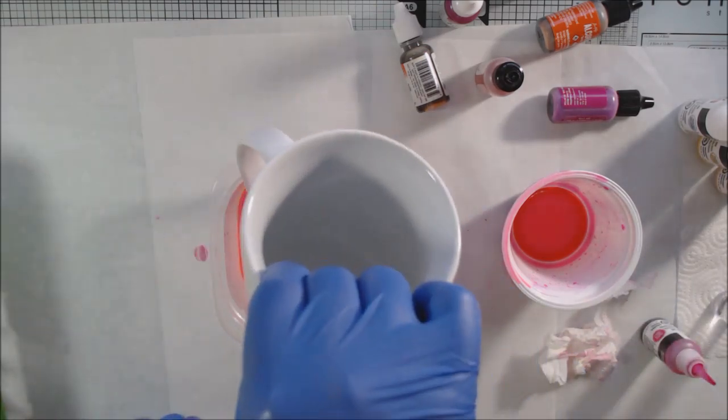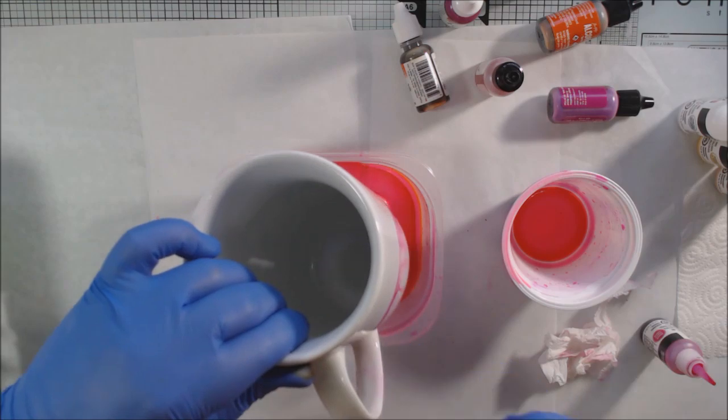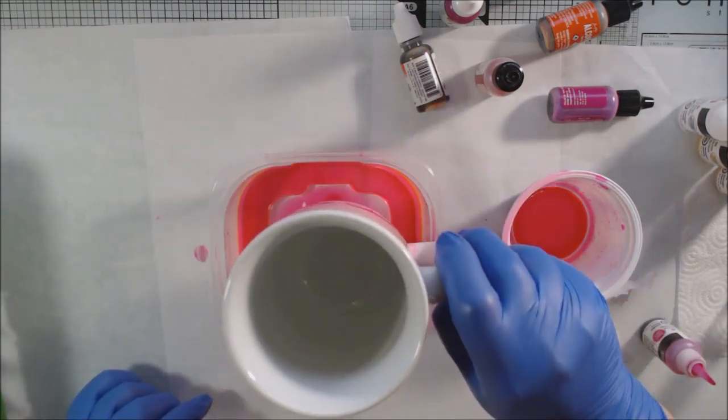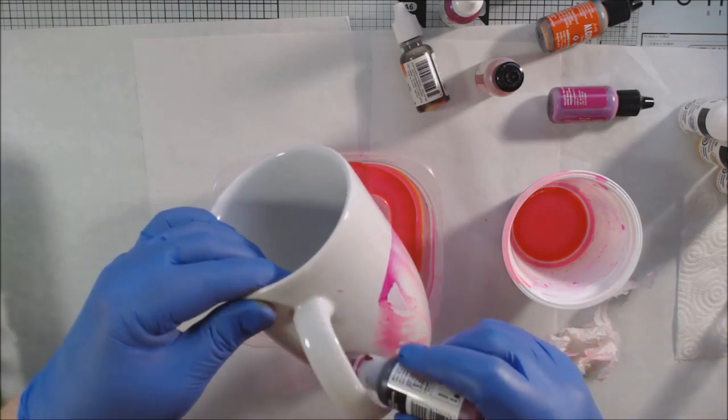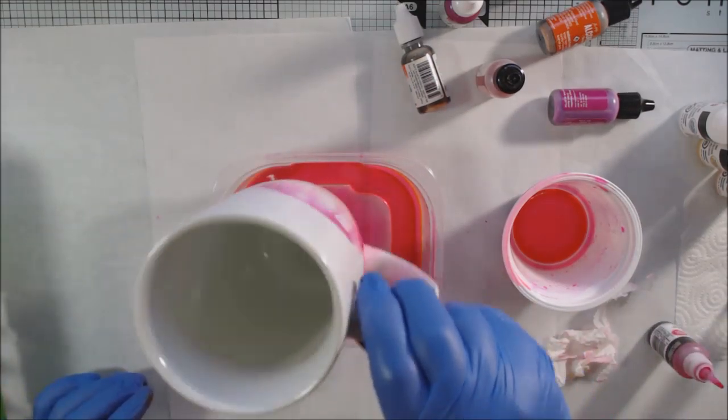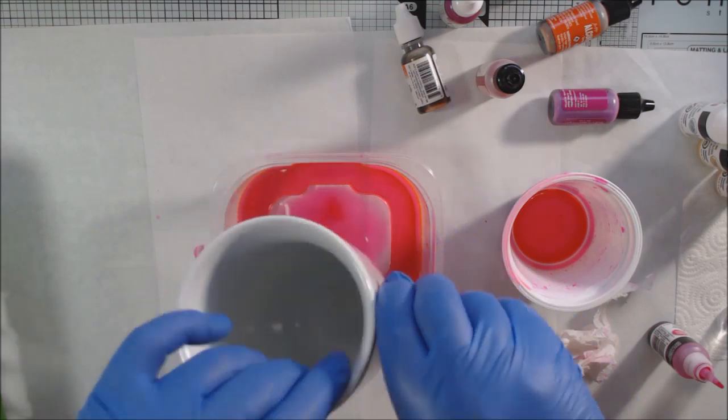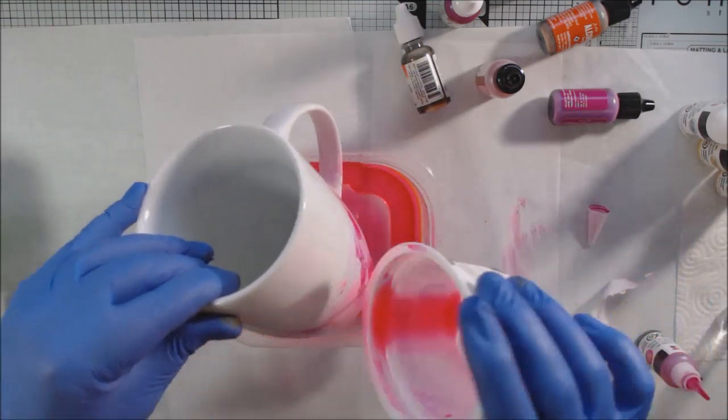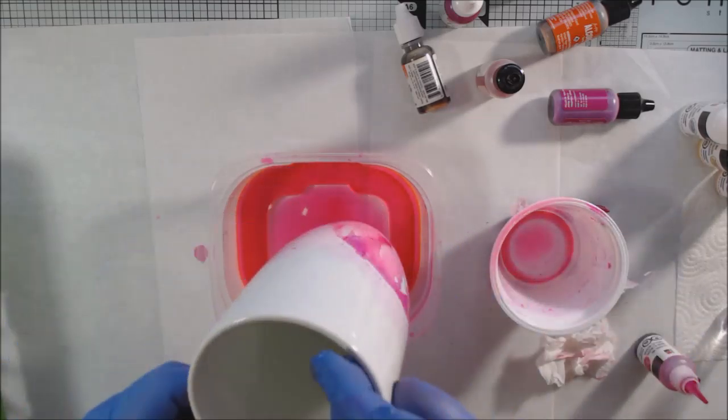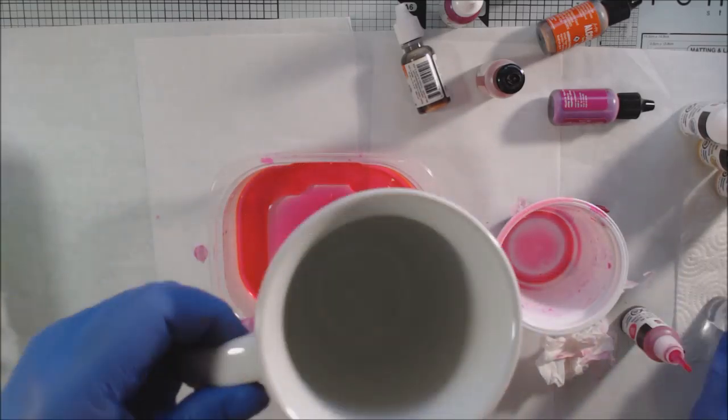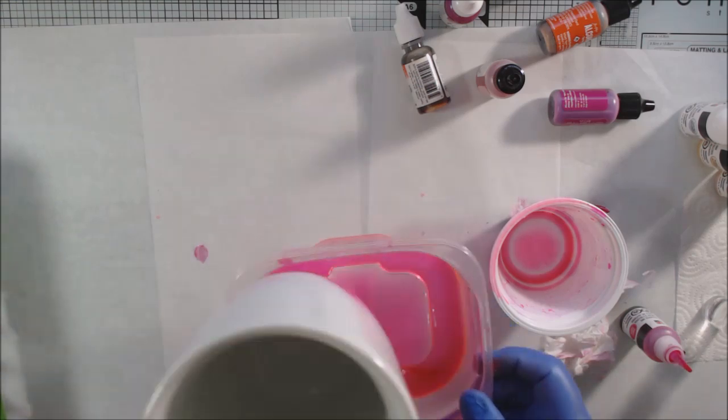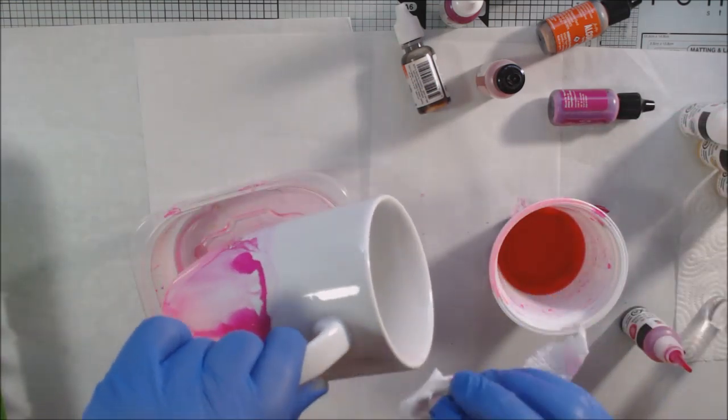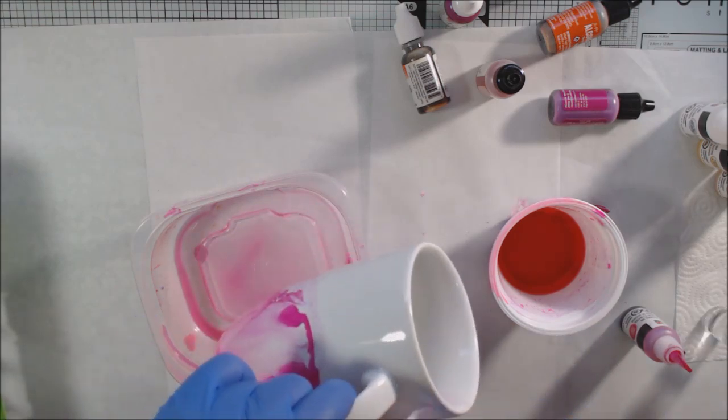Then I put a couple drops of different colors—magenta, bright pink, and some orange—into the alcohol, swished it around, and started pouring it over the bottom of the cup. I don't want design up around where your mouth is, so the top will remain completely white.